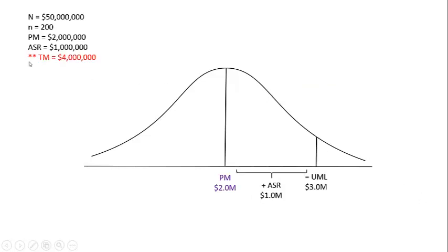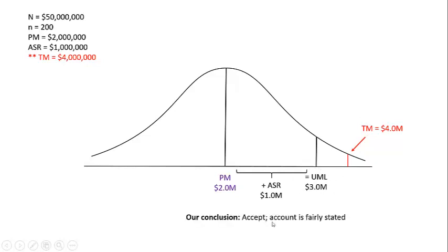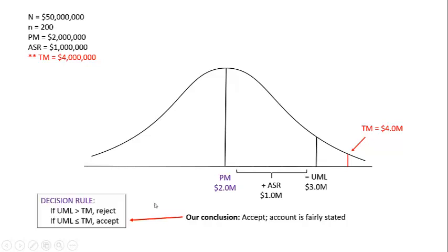If the tolerable misstatement is equal to or outside the upper bound, the account is considered fairly stated. For example, changing the tolerable misstatement to $4 million: the $4 million tolerable misstatement is beyond the upper bound of $3 million. We can tolerate up to $4 million, and we think the misstatement may be as high as $3 million — so we're okay. The account is fairly stated and we accept it, because the upper misstatement limit is less than or equal to the tolerable misstatement.